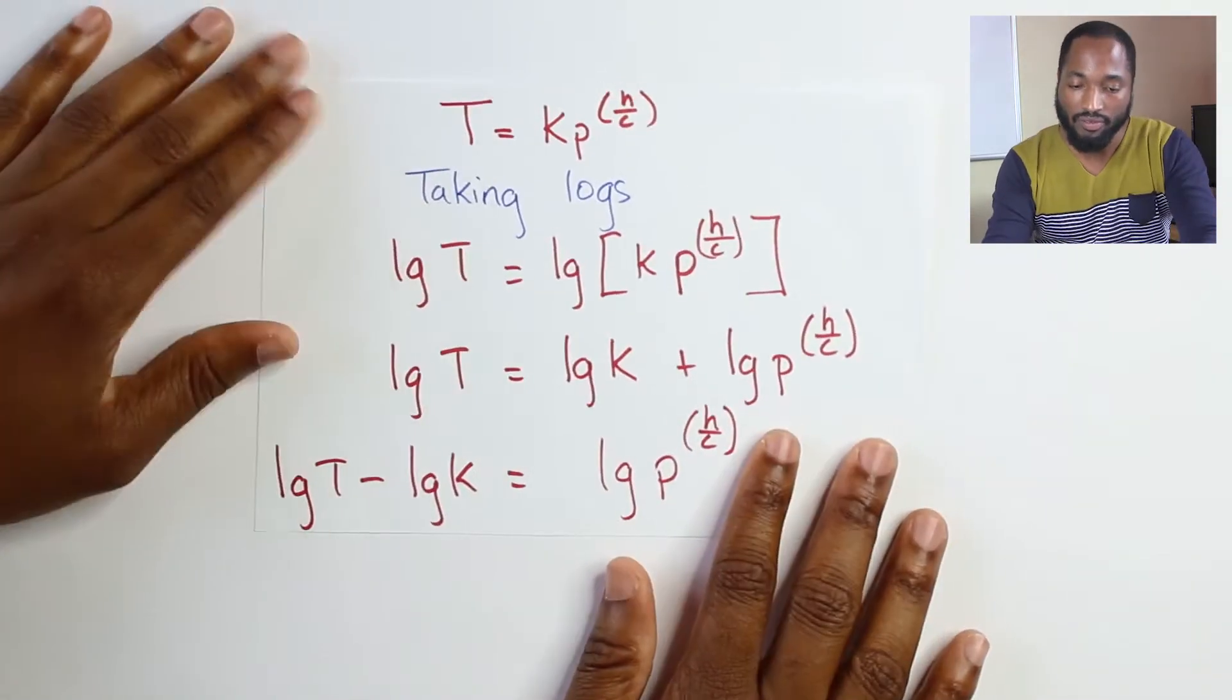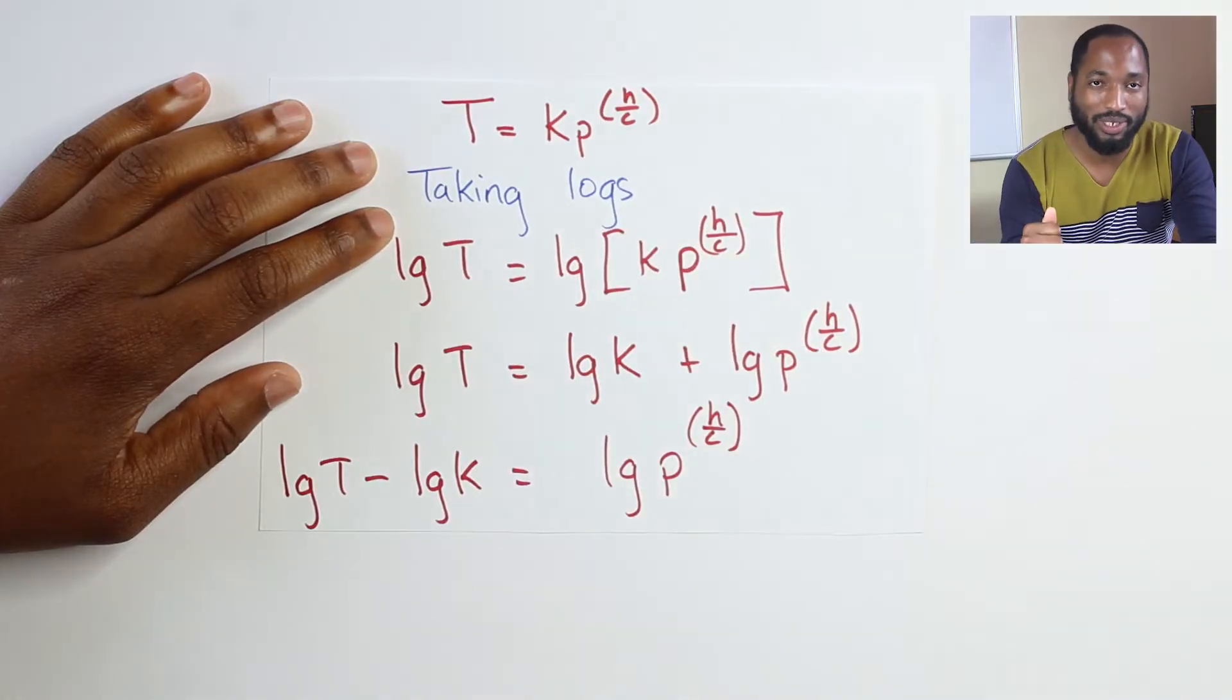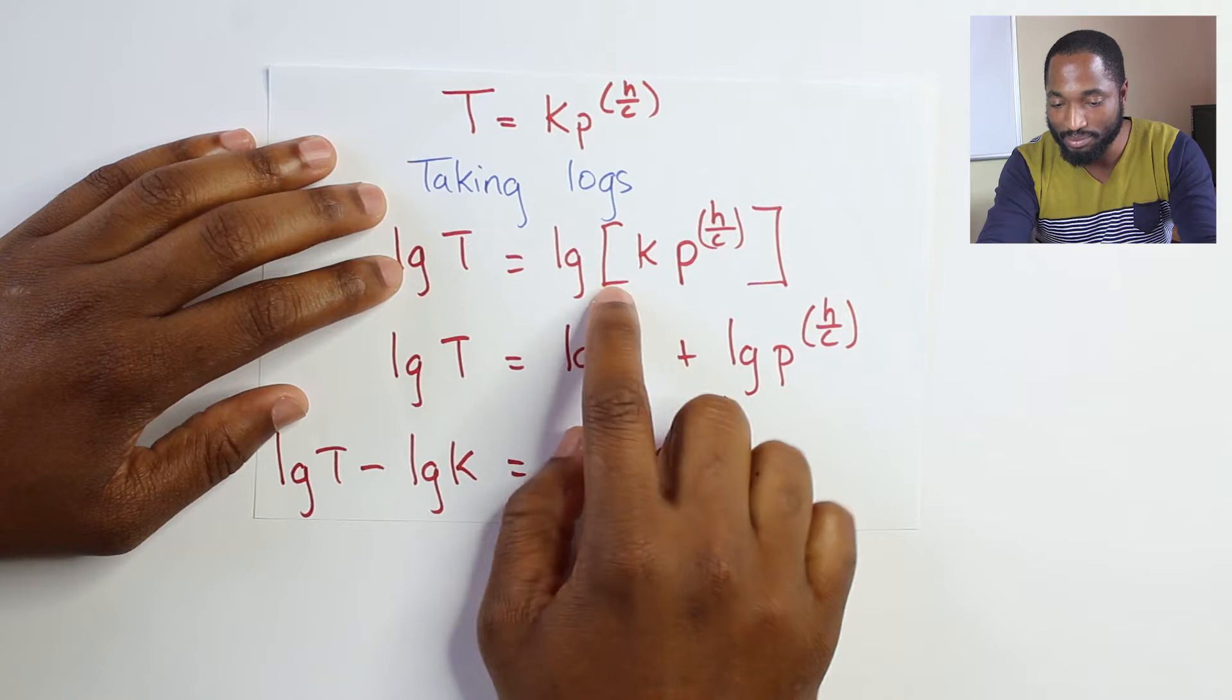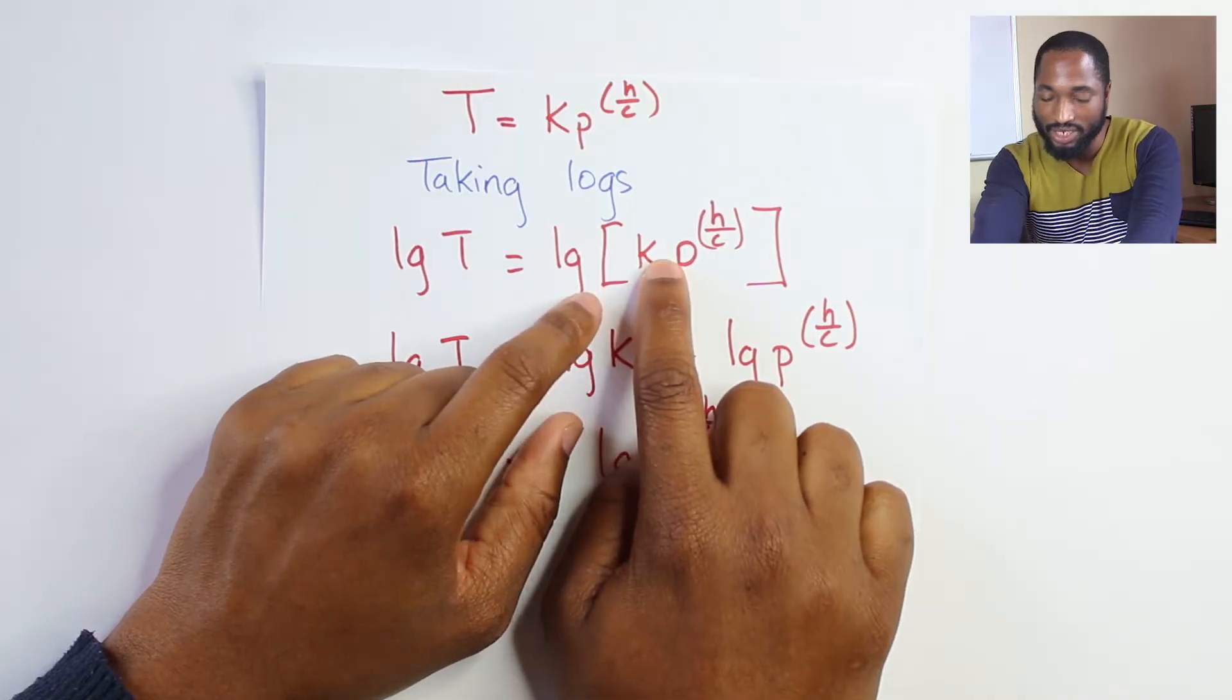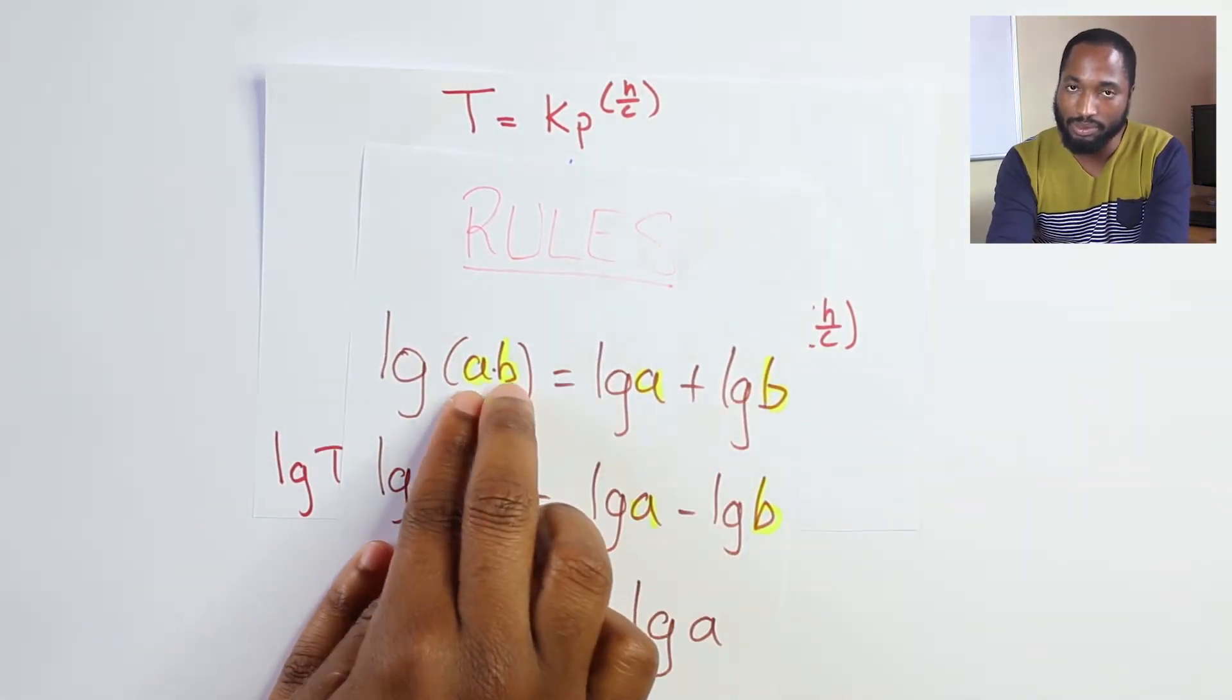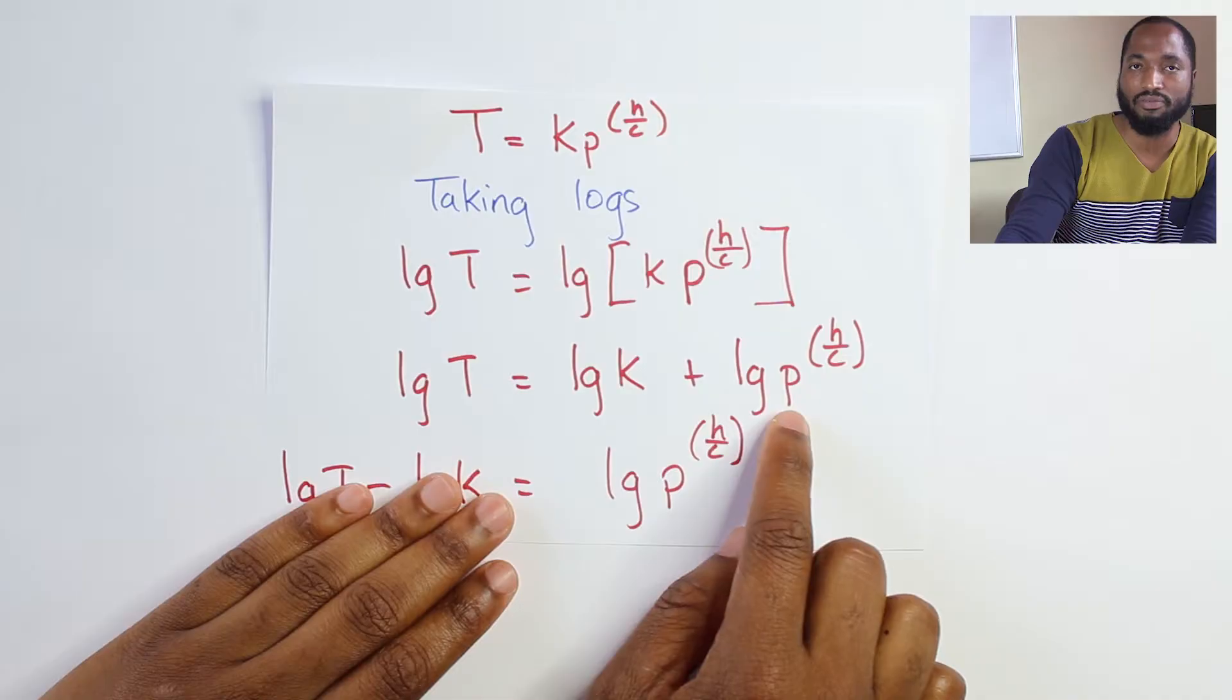First thing we're going to do with that formula: take logs. Anytime you're taking logs, you should feel good about yourself - you're about to do something marvelous. Take logs on both sides, put that in a big bracket, and this is K multiplied by P to the power of h/c. This is a multiplication taking place here. Hit them with that rule - when you're multiplying, you can split it up: log(T) = log(K) + log(P^(h/c)).